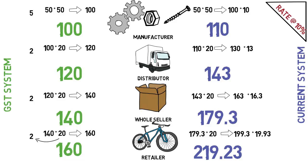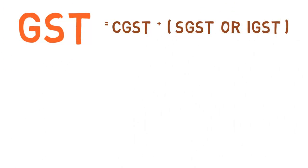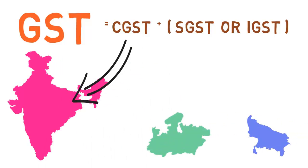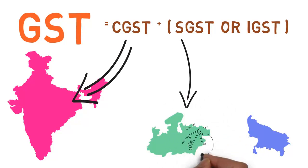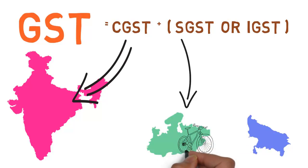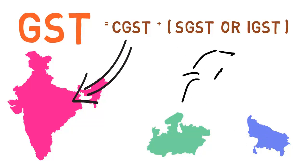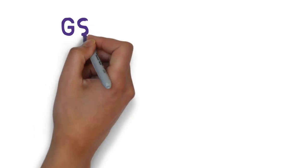Comparing the two systems, the product is 59.23 rupees cheaper under the GST system than the current system. GST is a combination of CGST and SGST, or IGST. CGST is Central GST paid to the central government, SGST is State GST paid to the state government, and IGST is Integrated GST, which applies when goods and services move interstate. For example, if a product is manufactured in Madhya Pradesh and sold in another state, IGST is distributed between both states and SGST will not be collected.